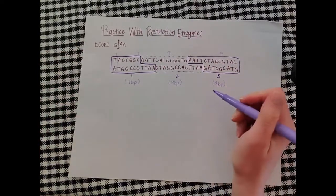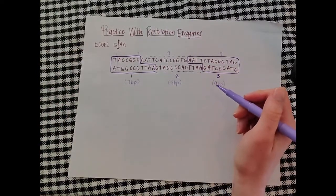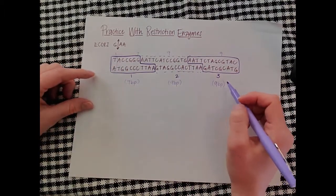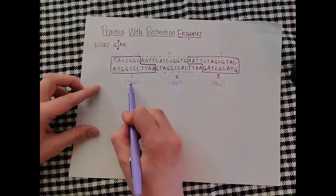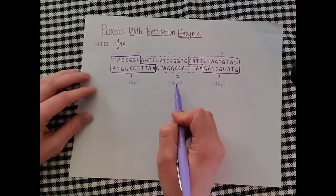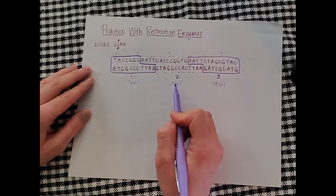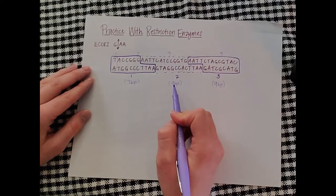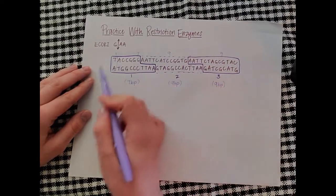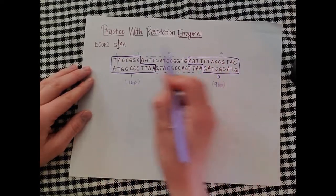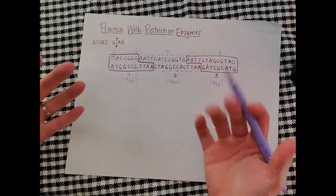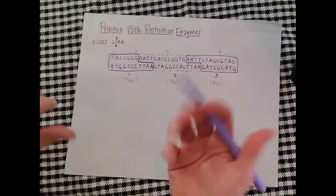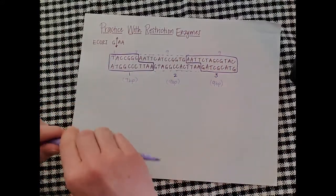So this will become very important when we have gel electrophoresis because these chunks of DNA, they're going to be different sizes. Seven base pairs is smaller than nine base pairs. And that's going to cause there to be different size bands on our gel electrophoresis. So restriction enzymes are really about chopping up this DNA into recognizable chunks so that we can better see them on a gel when we do electrophoresis.